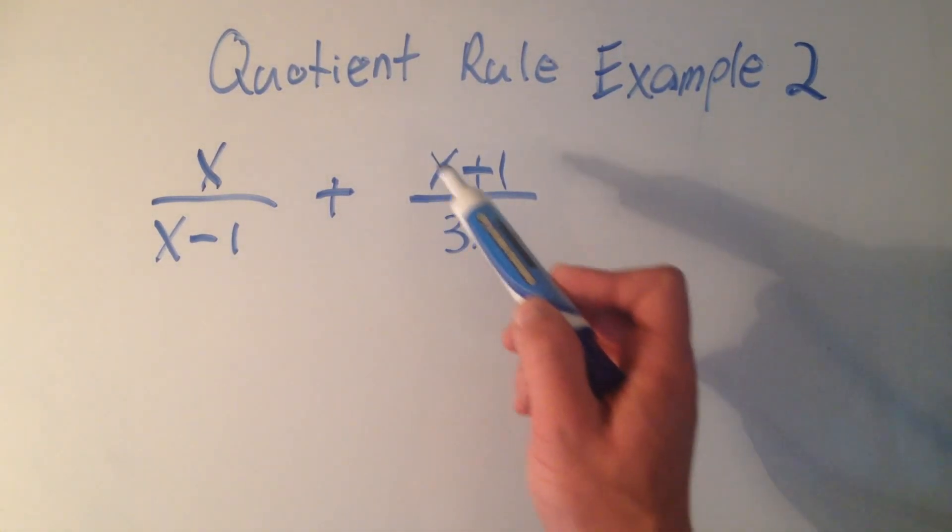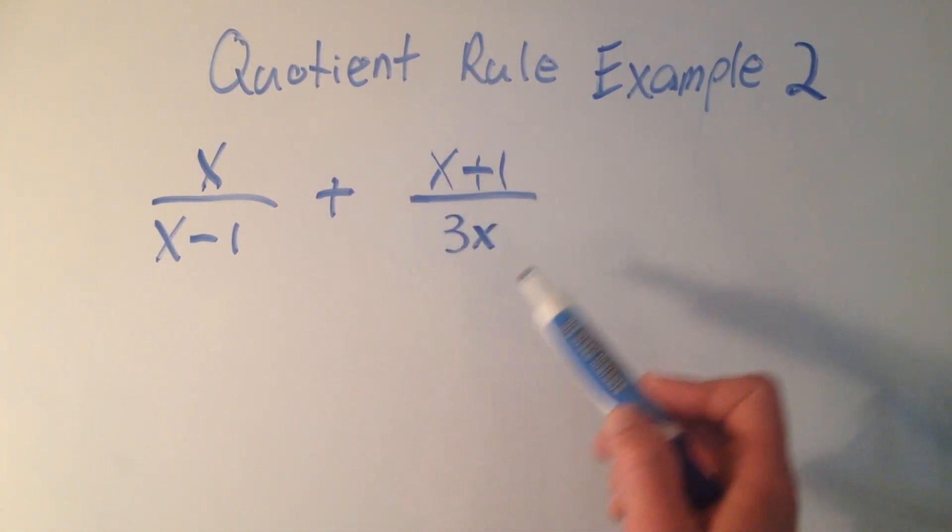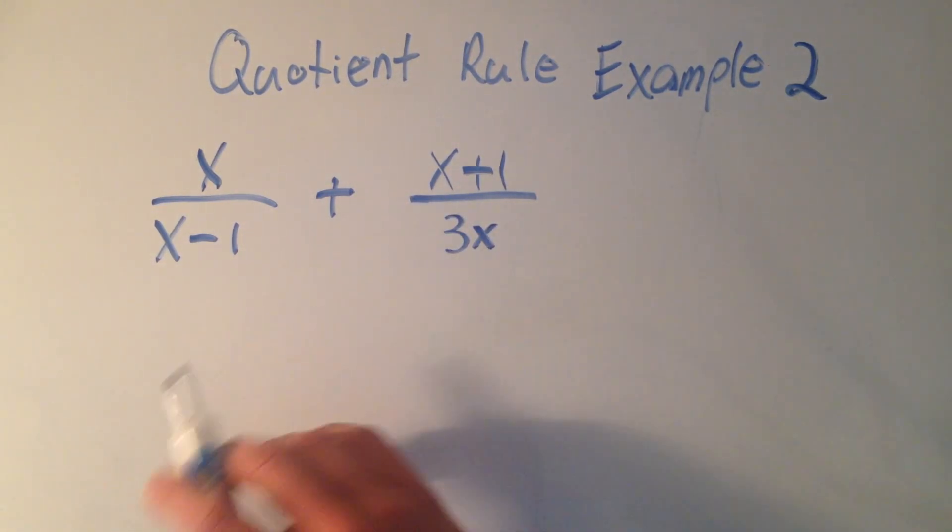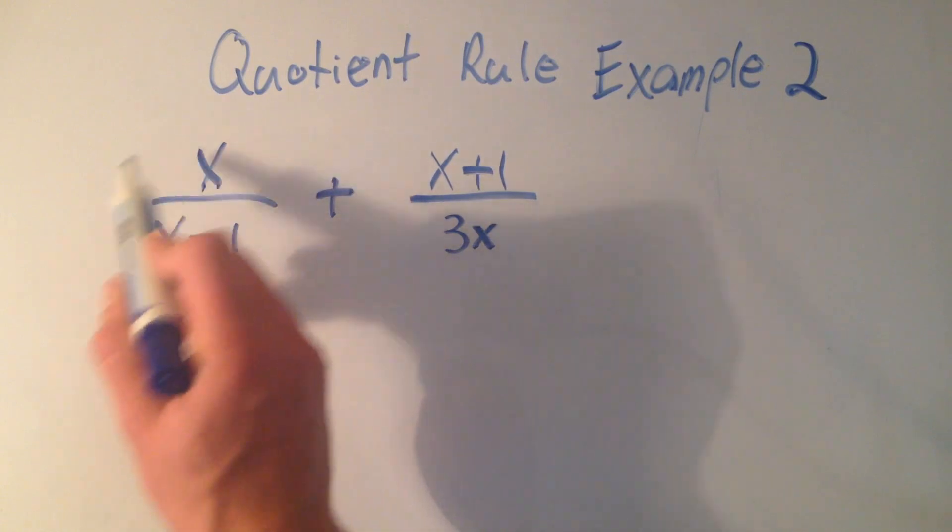Now I could split this up into x over 3x plus 1 over 3x, but since this is about the quotient rule, let's use the quotient rule. So if I'm just working on this first part...